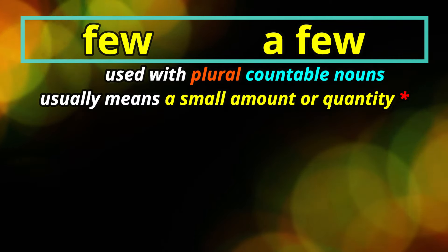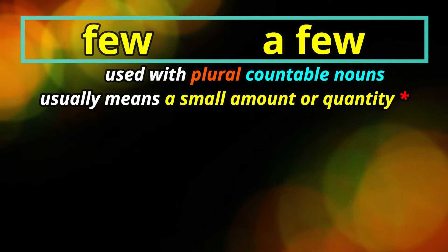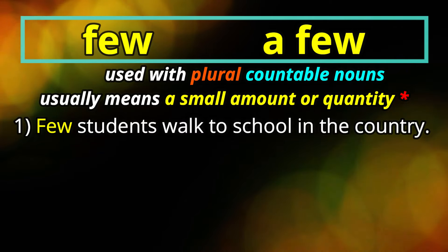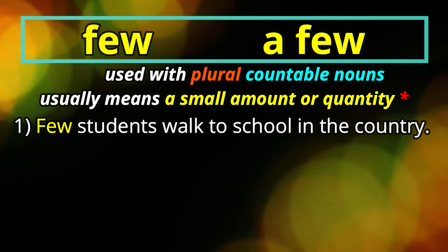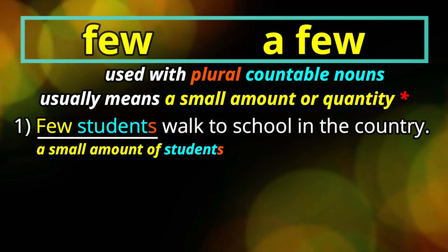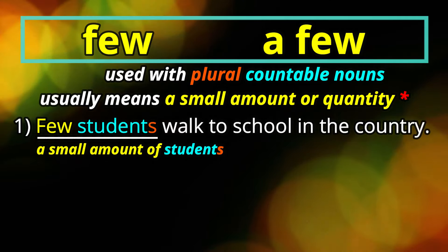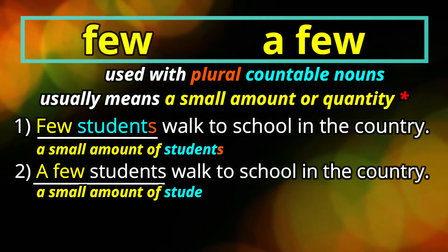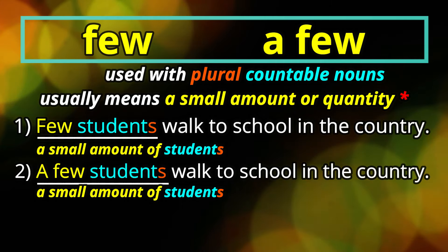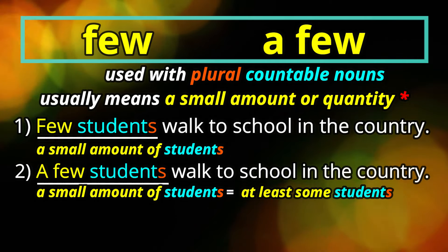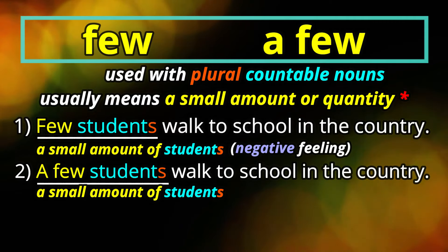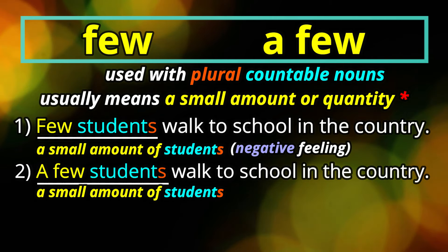Next we're going to look at few and a few — they're used with plural countable nouns and they usually mean a small amount or quantity of something. In the first example: few students walk to school in the country. When few is used like this, the emphasis is on the small amount of students who walk. In example two: a few students walk to school in the country. Here, the emphasis is that there are a small amount, but there are at least some students that walk. So few implies a small amount — maybe in a negative way — while a few says there's a small amount but some students do walk to school.